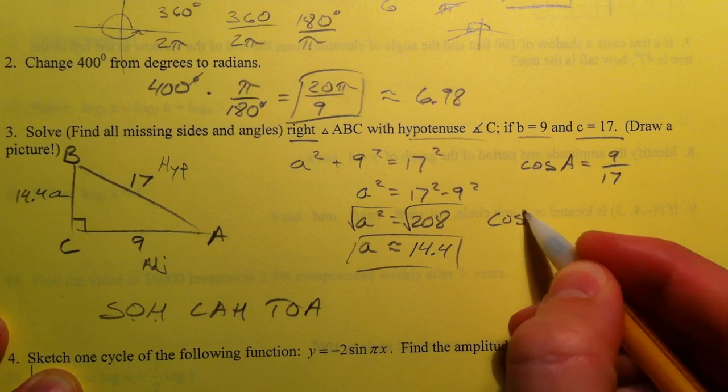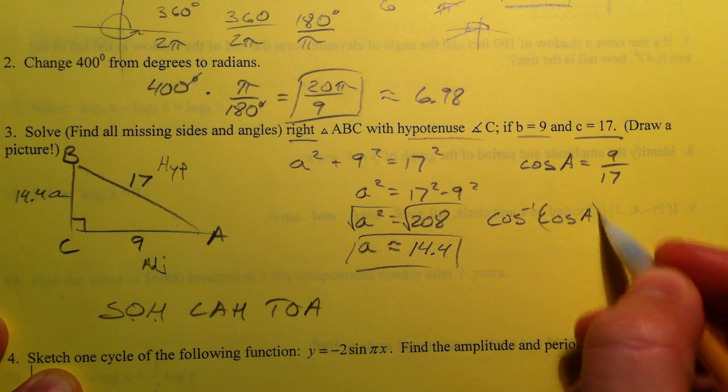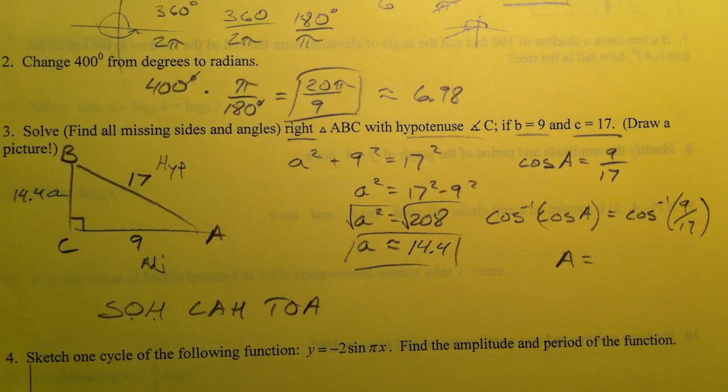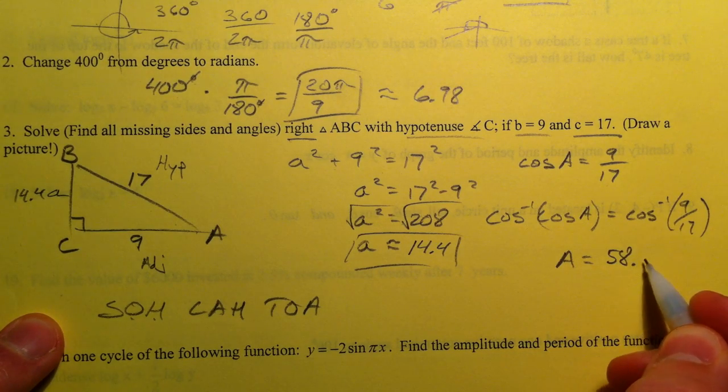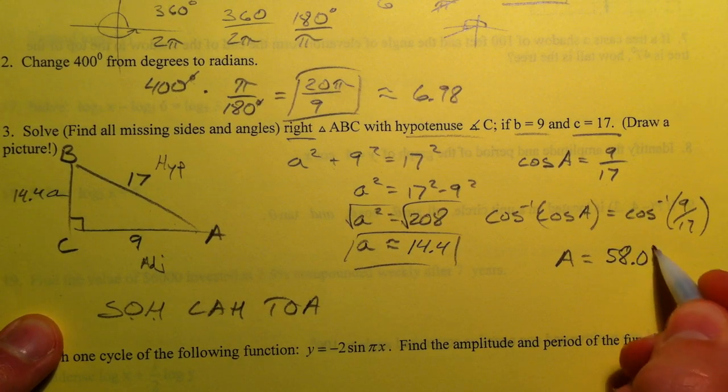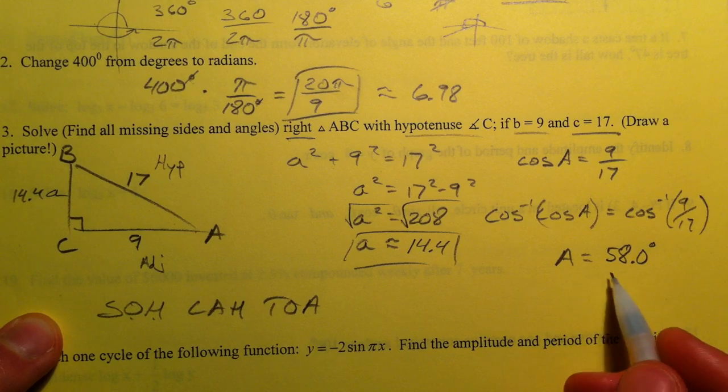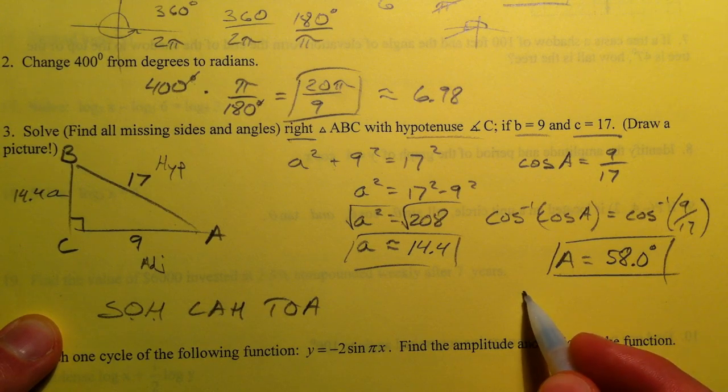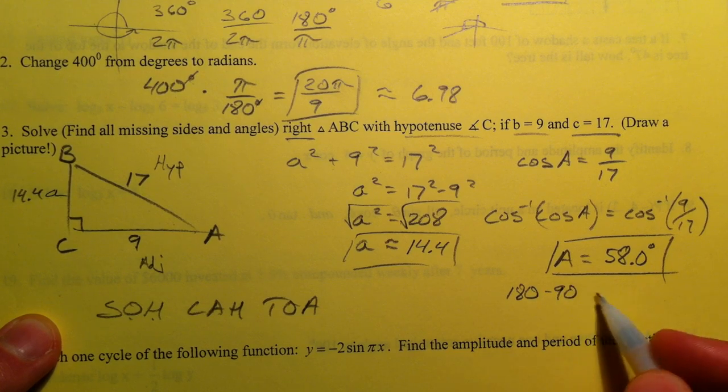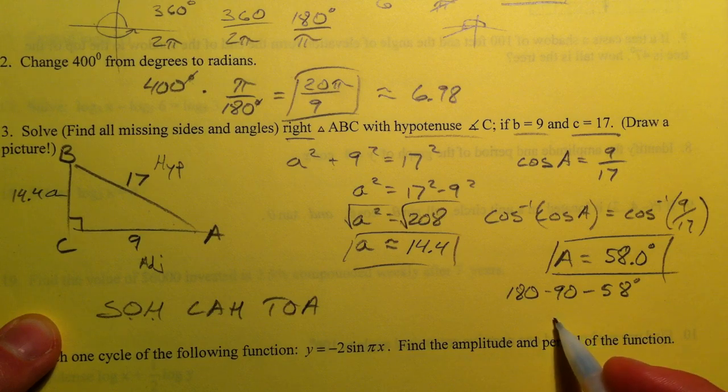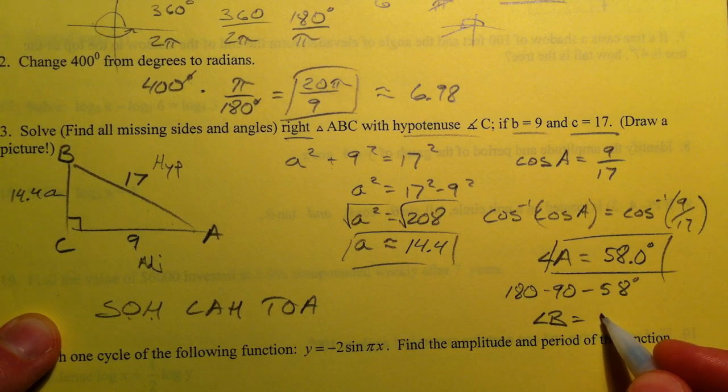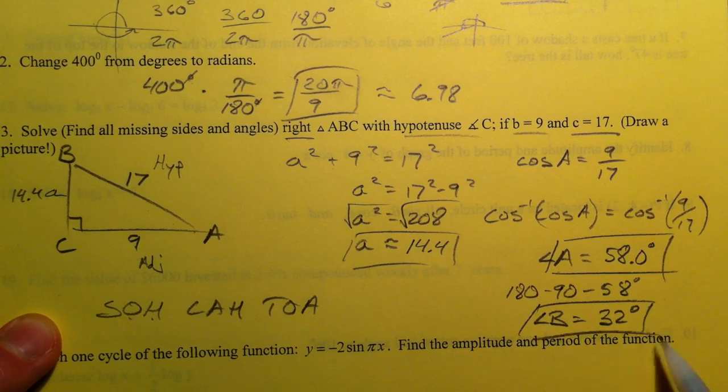So we take the inverse cosine now to undo the cosine. Inverse cosine of both sides. So angle A. When you do this, you want to make sure you are in degree mode. If not, you will get a radian answer anytime you do sine or cosine or tangent. So 58 degrees. And I want to be in degree mode because I want my answer to be in degrees. And then 180 minus our 90 minus our 58 degrees will give me angle B, which is going to be 40, 32. And there we have it.